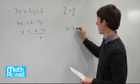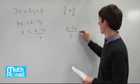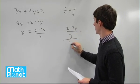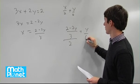We get 2 minus 2y over 3, over 2, plus y over 6.